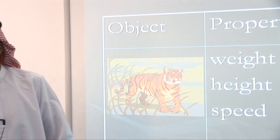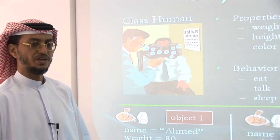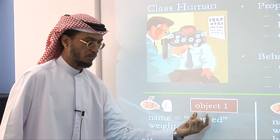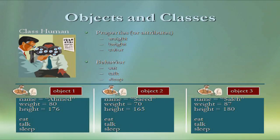As another example, if we talk about humans, we have object one of humans called Ahmed. His weight is 80 kilograms, let's say, and his height is 176 centimeters. Ahmed can eat, talk, sleep.